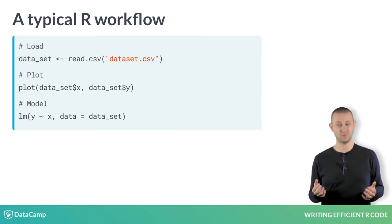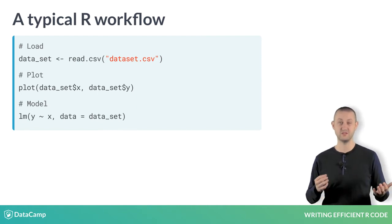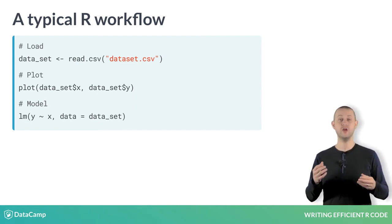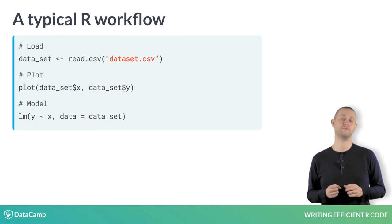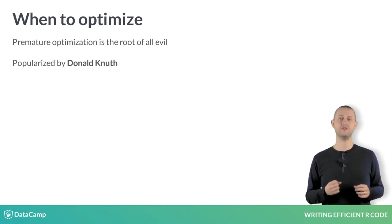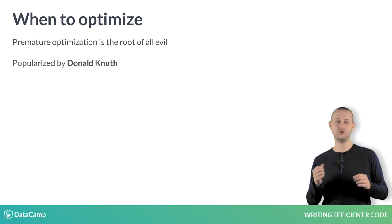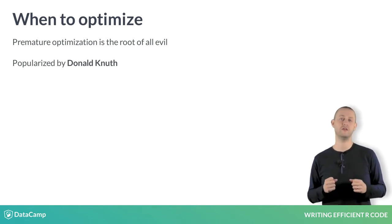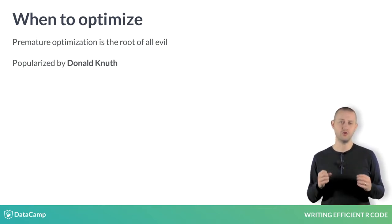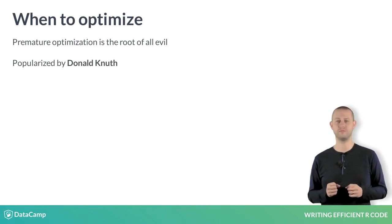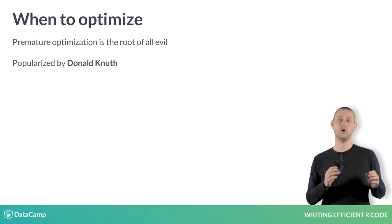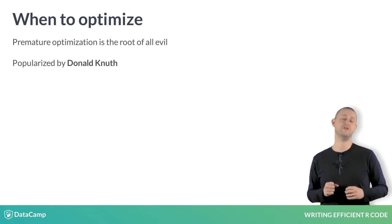However, with the advent of big data and complex statistical algorithms, you may have to optimise your code. Before you jump straight in at the deep end, you should remember what Donald Knuth said: premature optimisation is the root of all evil. That is, only optimise when necessary.